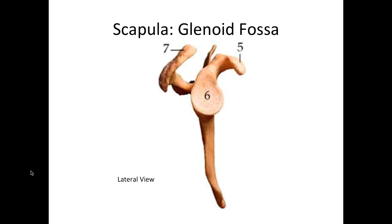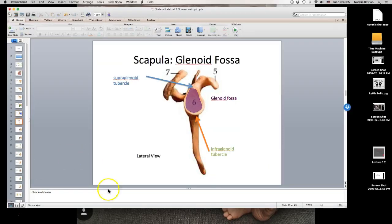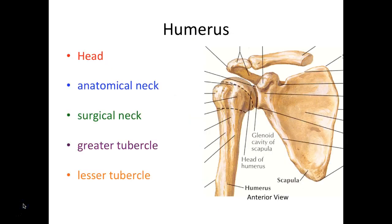This is a different view of our scapula — we are now looking at it laterally. We've basically removed the humerus, that arm bone, and you can see the glenoid fossa here, the supraglenoid tubercle, and the infraglenoid tubercle. Let's move on to the humerus — I'm only showing a proximal view for now, but we'll see a distal view in a moment. When we look at the humerus, we see a spherical portion called the head of the humerus, which forms the shoulder joint along with the glenoid cavity of the scapula.